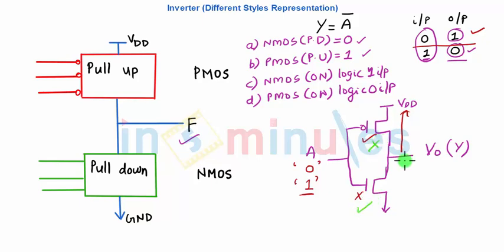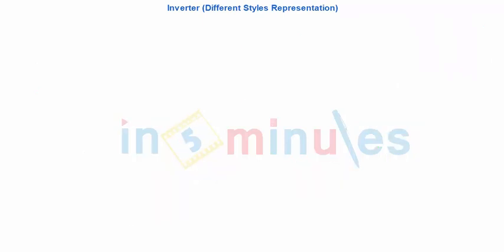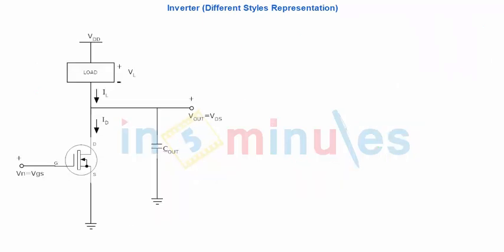When A is 1, that means my PMOS transistor is off, my NMOS transistor is on, and output is pulled to ground or logic value 0. So when input is 1, output is 0. So this is nothing but my static CMOS circuit, very straightforward. I taught you how to make it from the truth table also. Let's go ahead and make the same inverter in NMOS style.